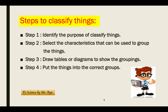The second step is to select the characteristics that can be used to group the things — for example, by color, size, or shape. The third step is to draw tables or diagrams to show the groupings, which makes your result easier to see.